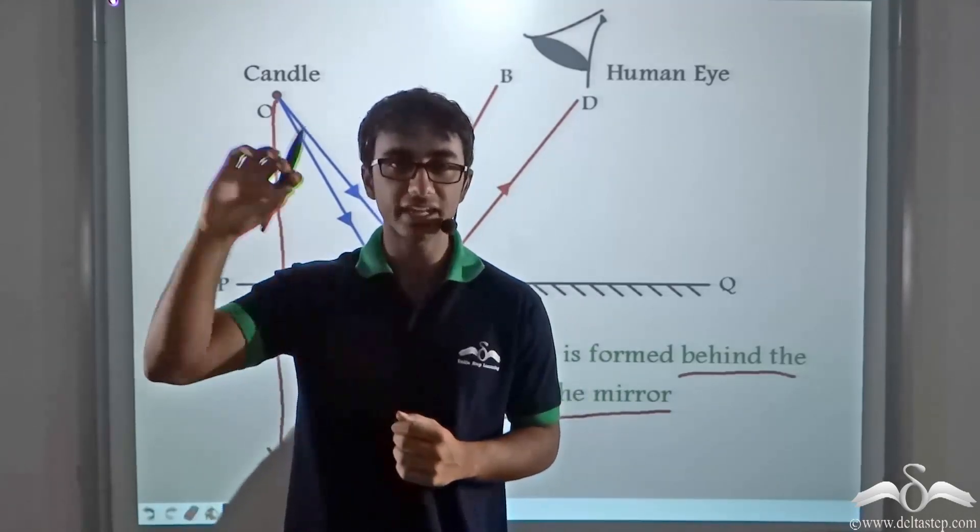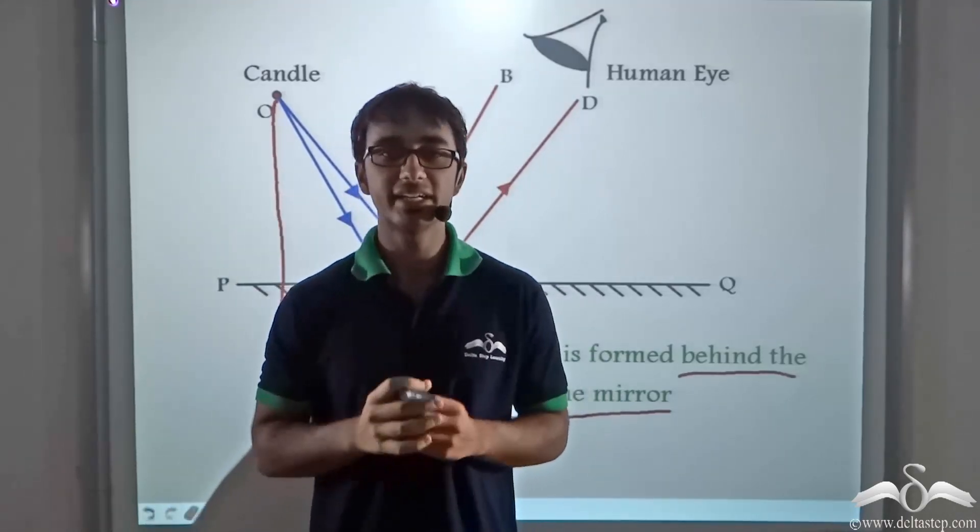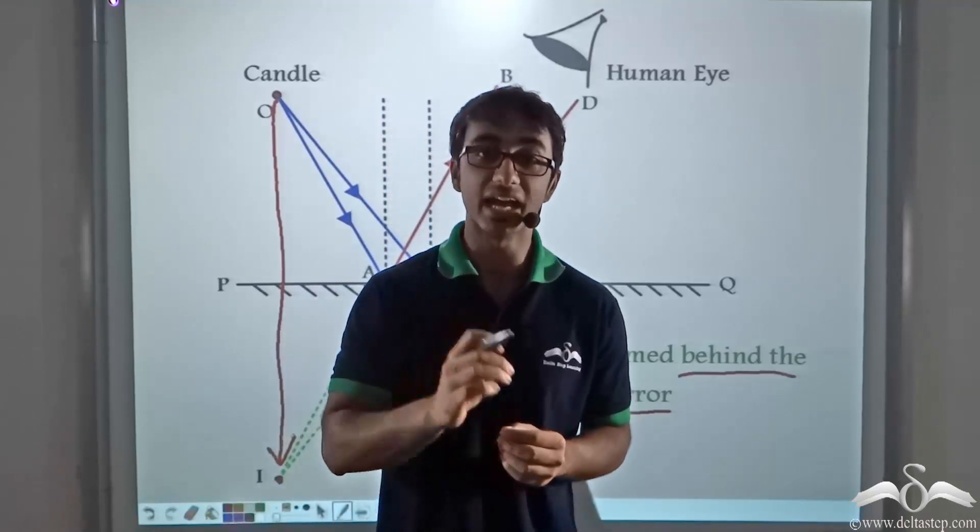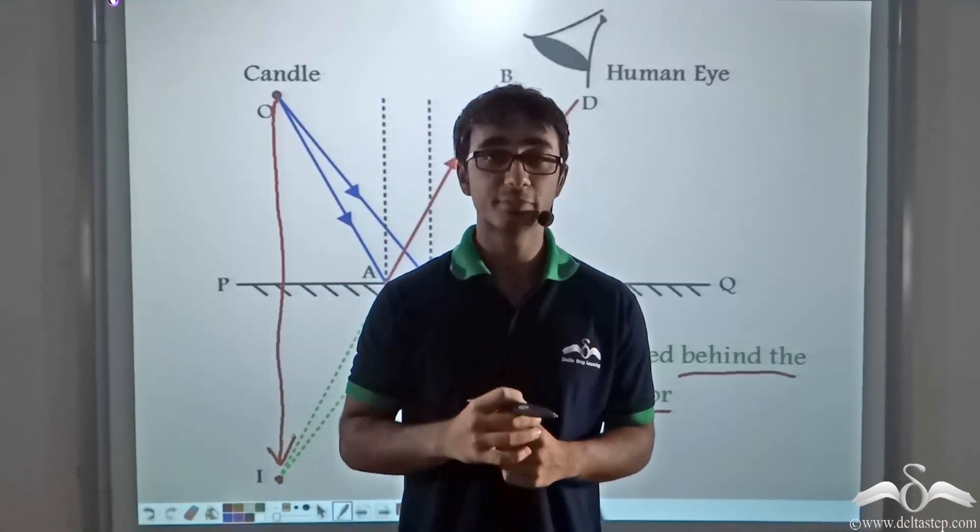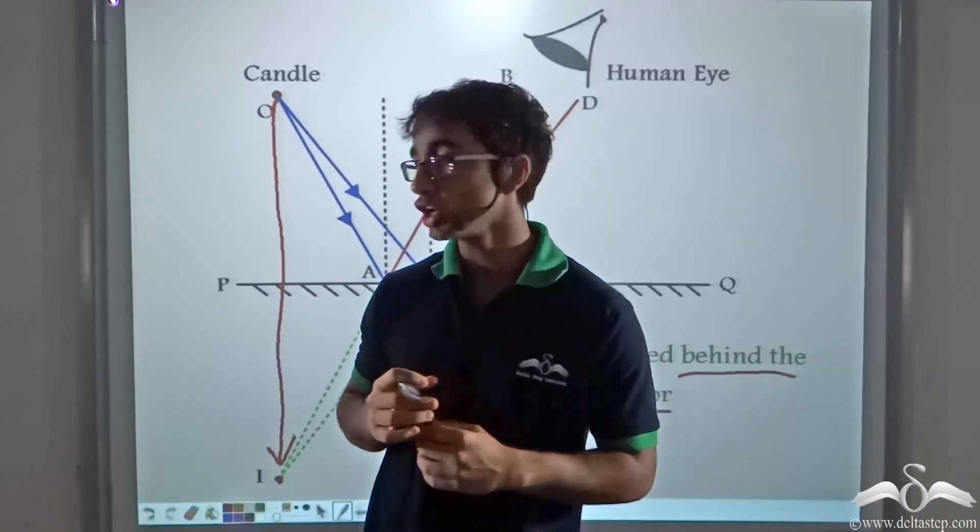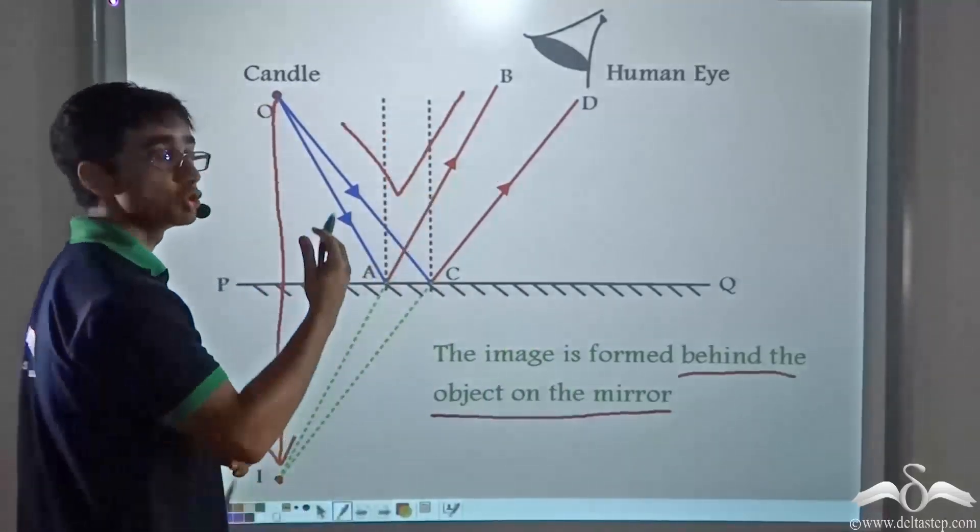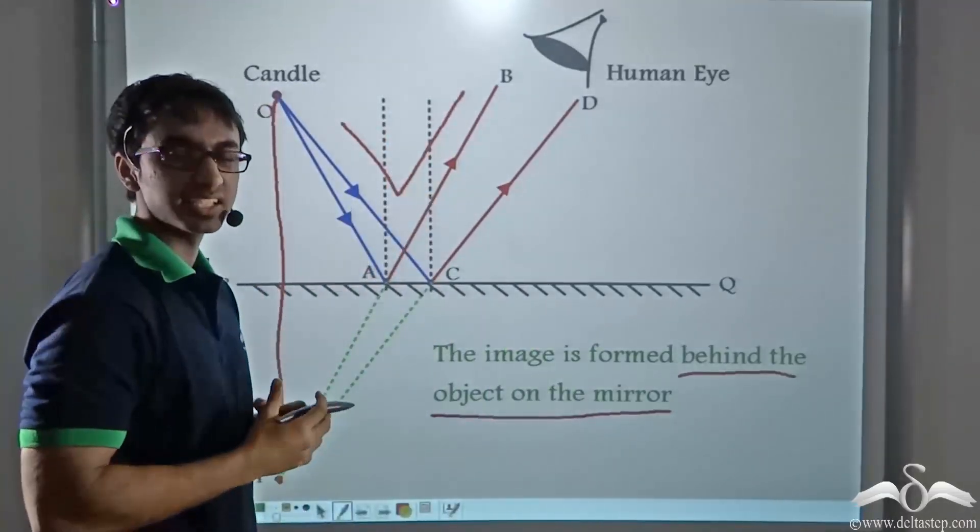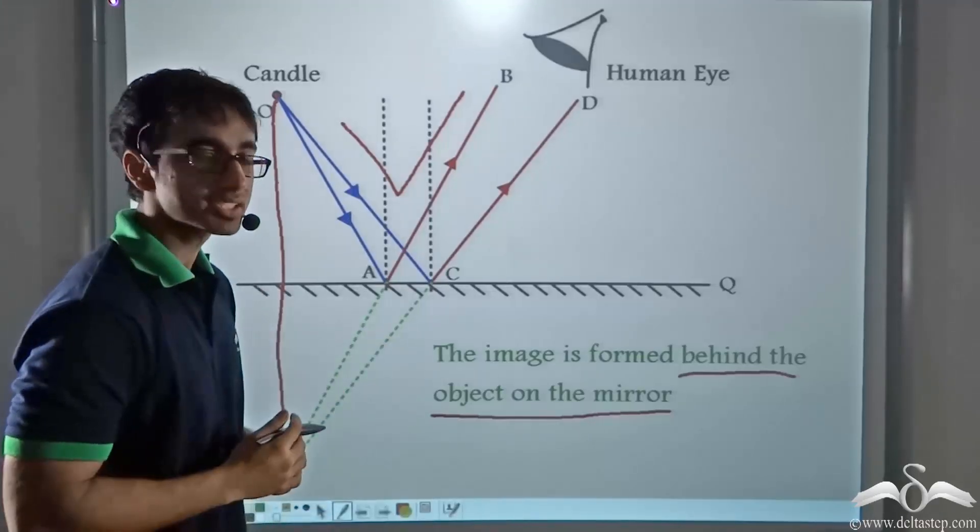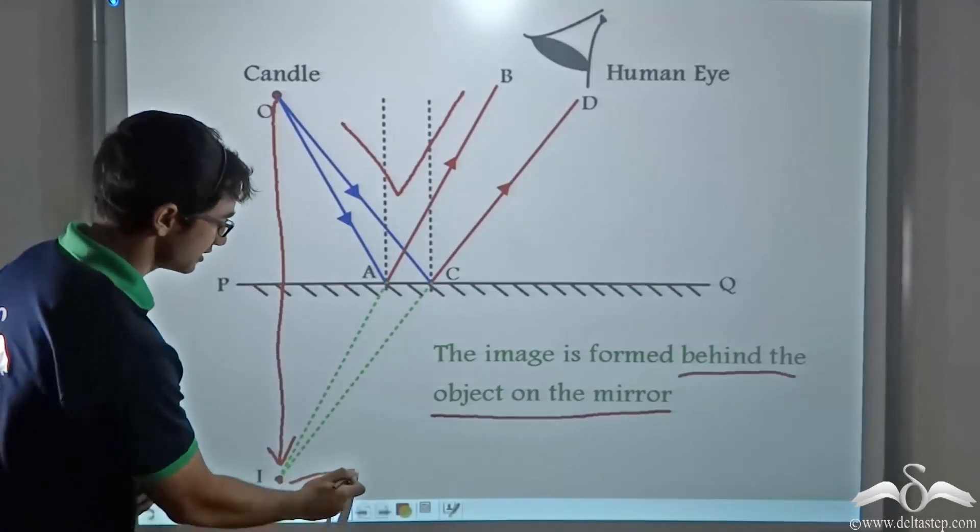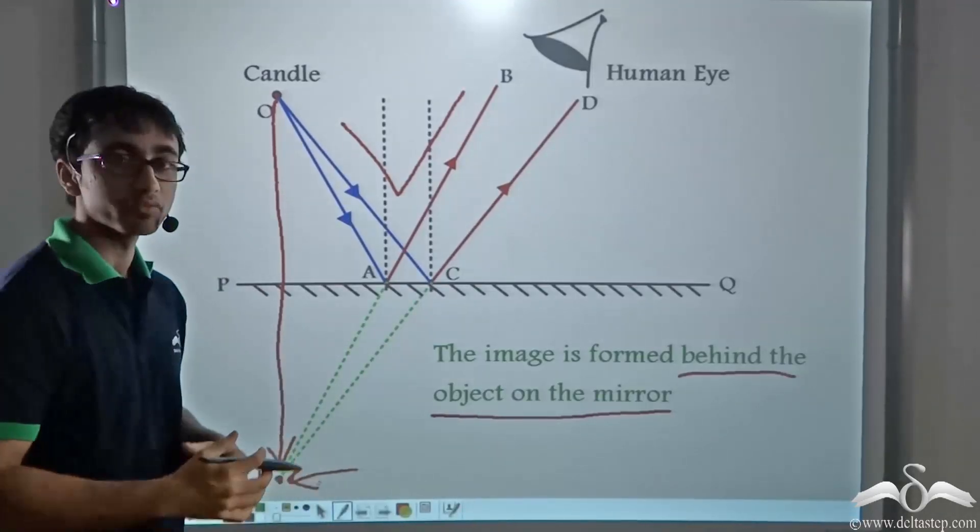These two rays, after reflection, will appear to be diverging from a point that is behind the mirror. This is because the human eye cannot perceive this V path. The human eye always perceives things in a straight line. Due to this, the image appears on the other side of the mirror.